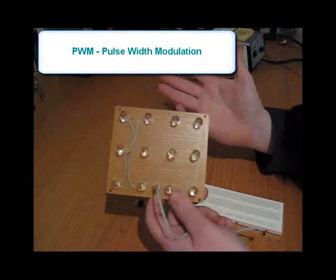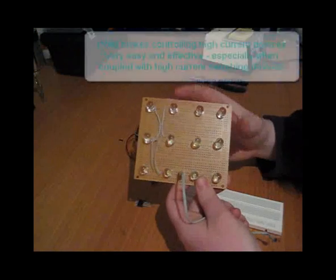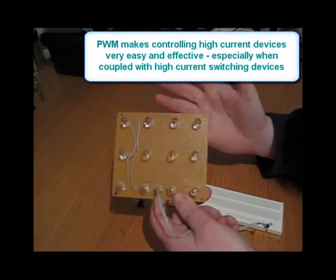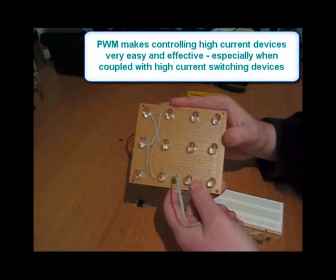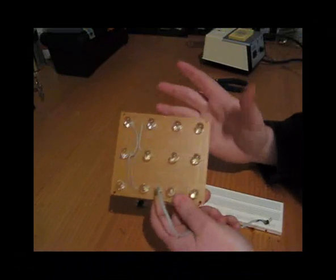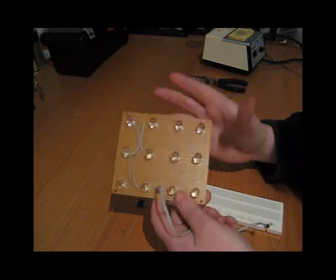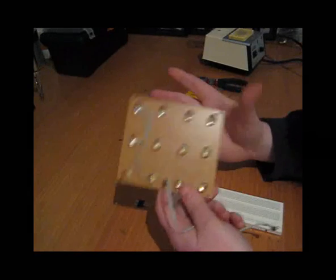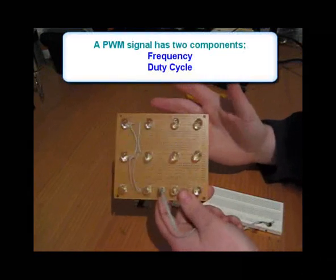PWM is handy to use in a lot of applications, whether it's simple DAC, digital to analog conversions, controlling the speed of DC motors, anything to do with the average current or average voltage in some cases, because you can control the frequency and the duty cycle of the signal.